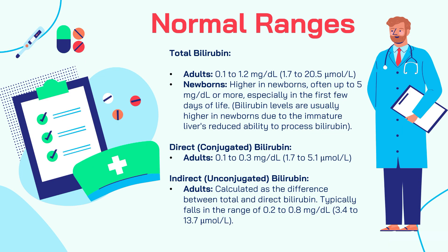Let's look at the normal ranges of bilirubin in the blood. In normal healthy adults, total bilirubin ranges from 0.1 to 1.2 milligrams per deciliter, or 1.7 to 20.5 micromoles per liter. Total bilirubin levels can be higher in newborns — often up to 5 milligrams per deciliter or more, especially in the first few days of life — due to the immature liver's reduced ability to process bilirubin.